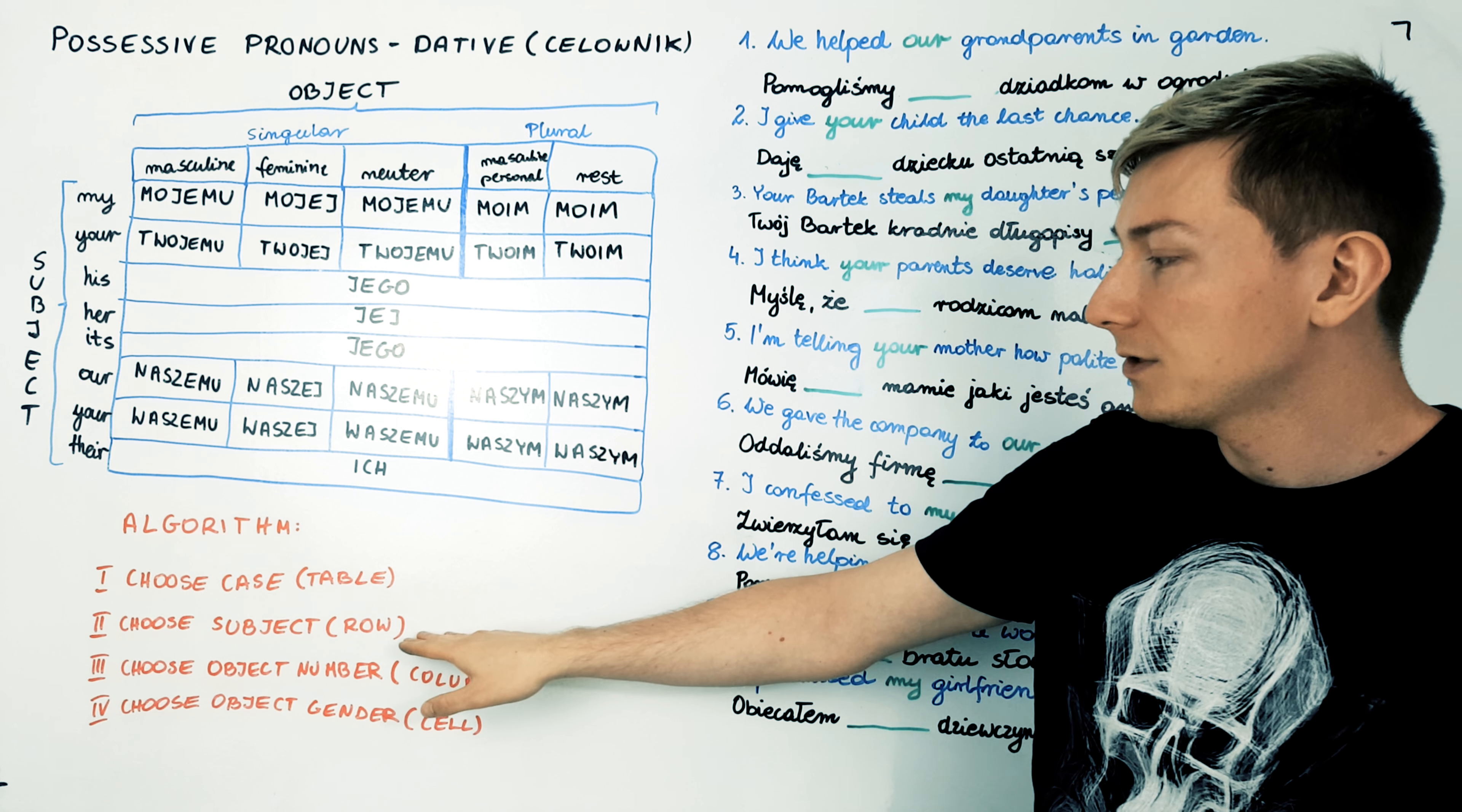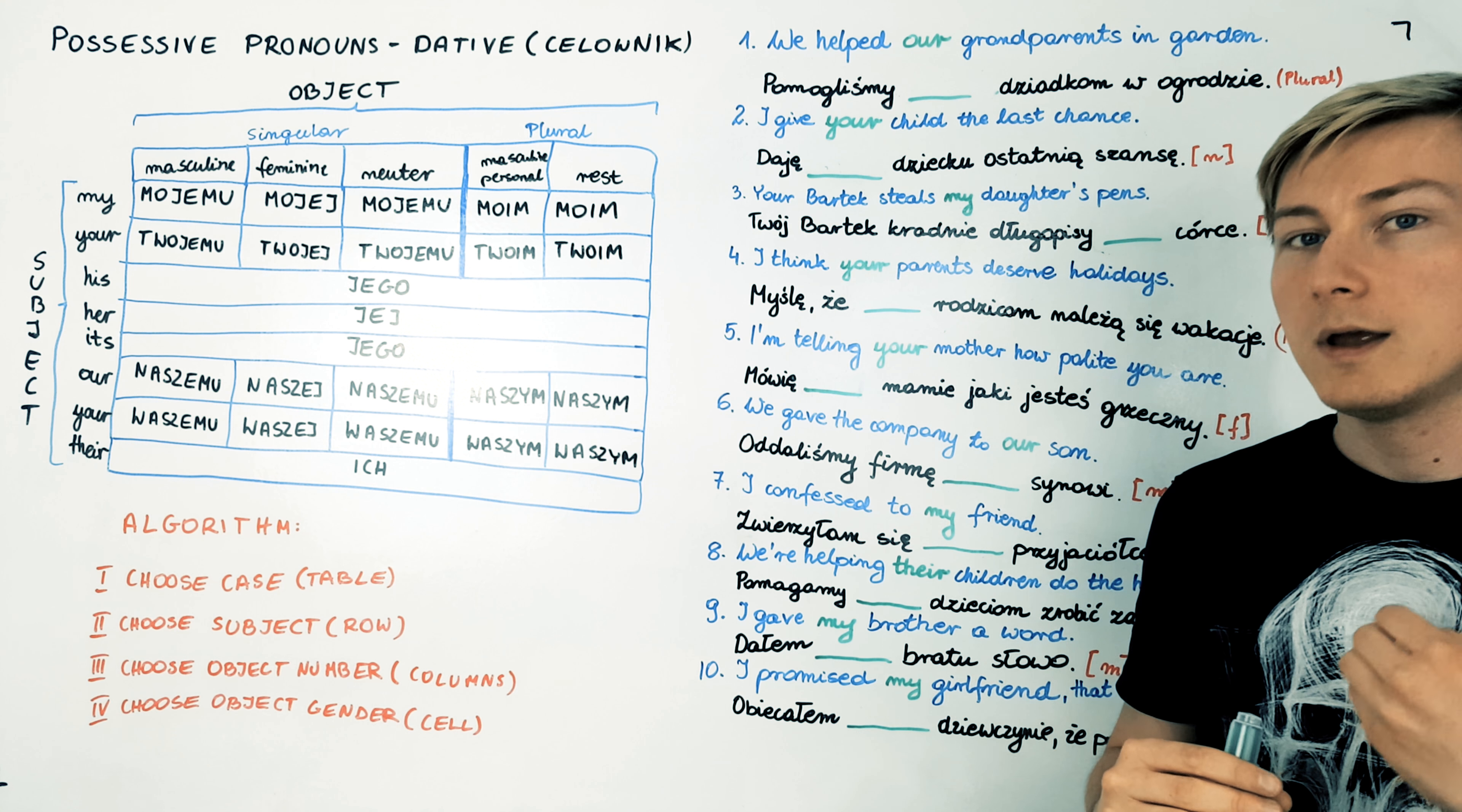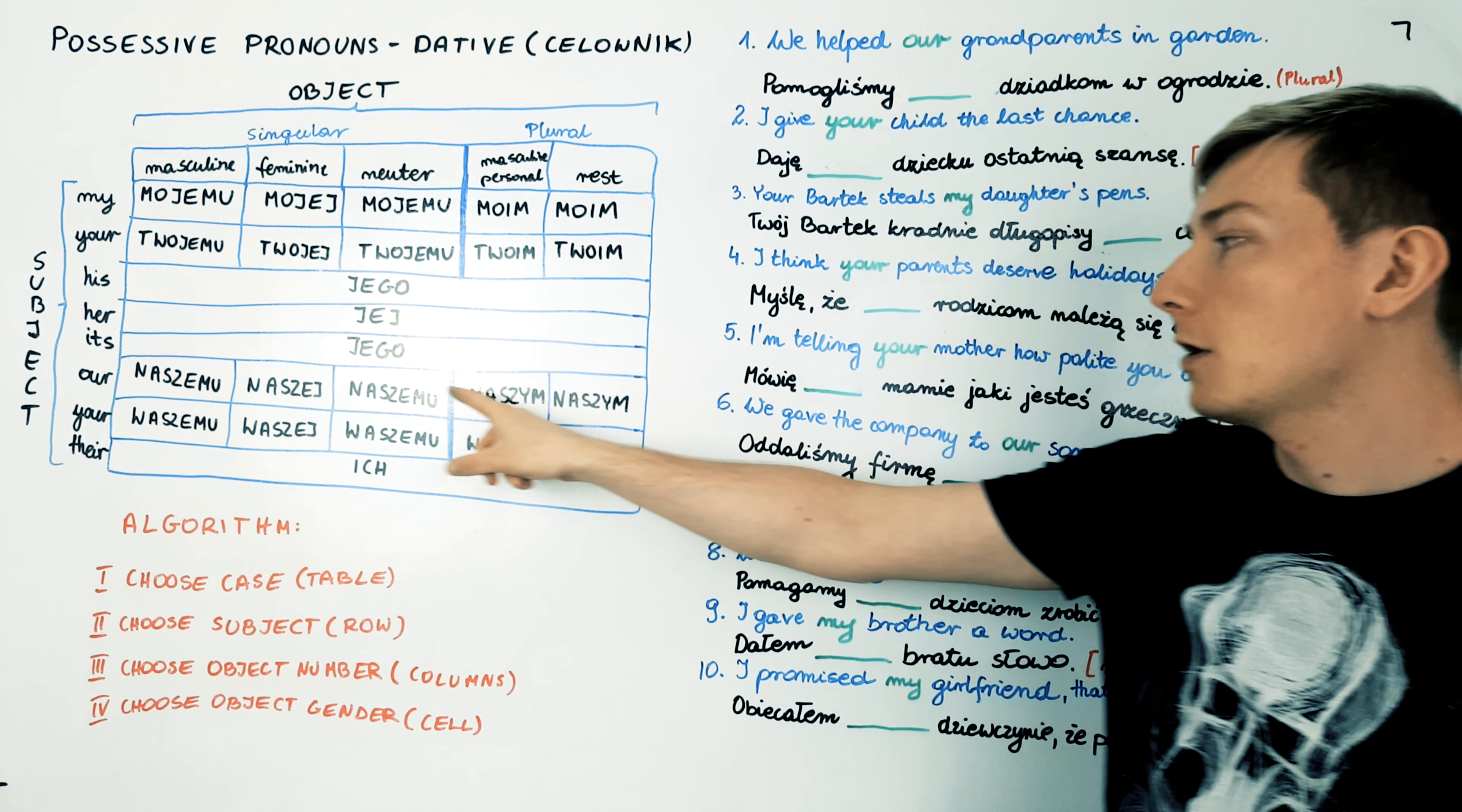The second step. Choose subject. Our grandparents. So we are the subject. We choose this row.